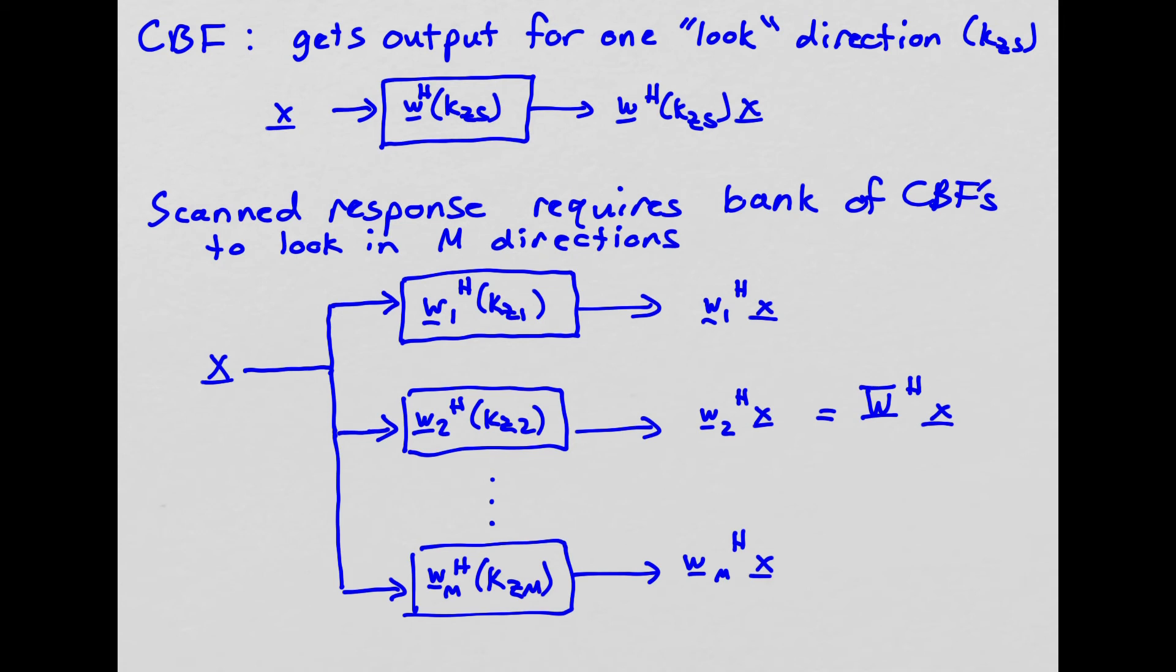So we can define that using nice matrix notation as a matrix multiply, where we store all the weight vectors in a big weight matrix, W, and we compute W Hermitian X. And so our scanned response is when we are scanning across a bunch of different look directions, and we get not a scalar output, now we get a vector output, because we have the output for each of those different m directions.